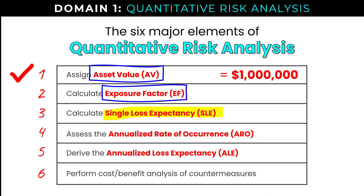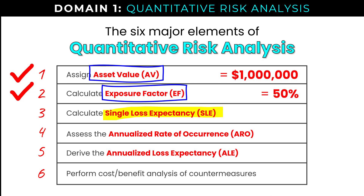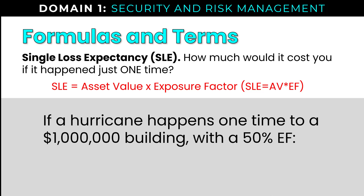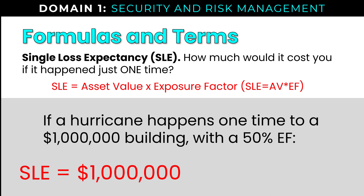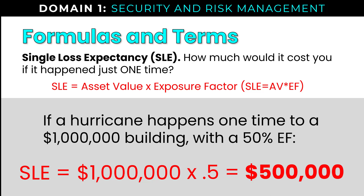Now we have our asset value and our exposure factor — let's calculate our single loss expectancy. If a hurricane happens one time to a million-dollar building with a 50% exposure factor, single loss expectancy is $1,000,000 times 0.5 (our exposure factor expressed as a decimal), which equals $500,000. That is our SLE.